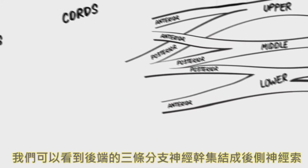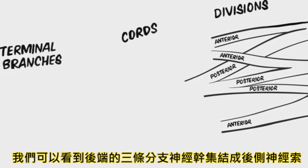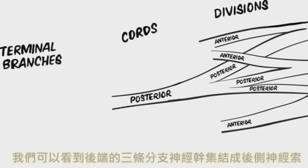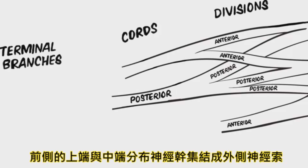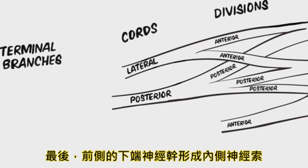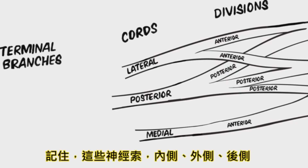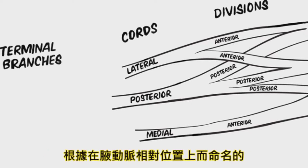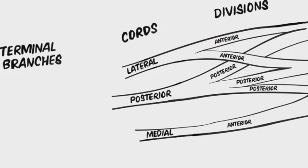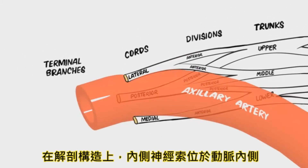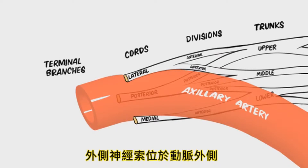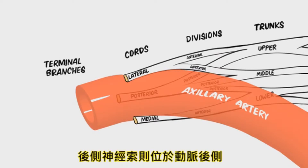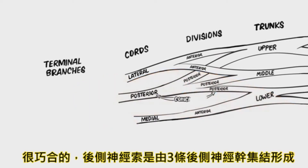Returning to the brachial plexus, we can see that the posterior divisions of each of the three trunks join together to form the posterior cord. The anterior division of the upper trunk and the anterior division of the middle trunk join together to form the lateral cord. Finally, the anterior division of the lower trunk continues by itself to form the medial cord. These cords — medial, lateral, and posterior — are named according to their position relative to the axillary artery. The medial cord lies medial to the artery, the lateral cord lies lateral to the artery, and the posterior cord lies posterior to the artery. It's just a coincidence that the posterior cord is also formed by the posterior divisions of the three trunks.